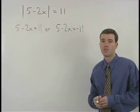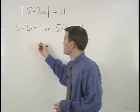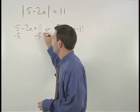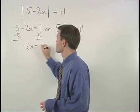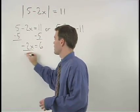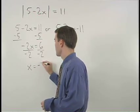Now all we have to do is solve our two equations. On the left, subtract 5 from both sides to isolate the x term and we get negative 2x equals 6. Divide both sides by negative 2 and x equals negative 3.